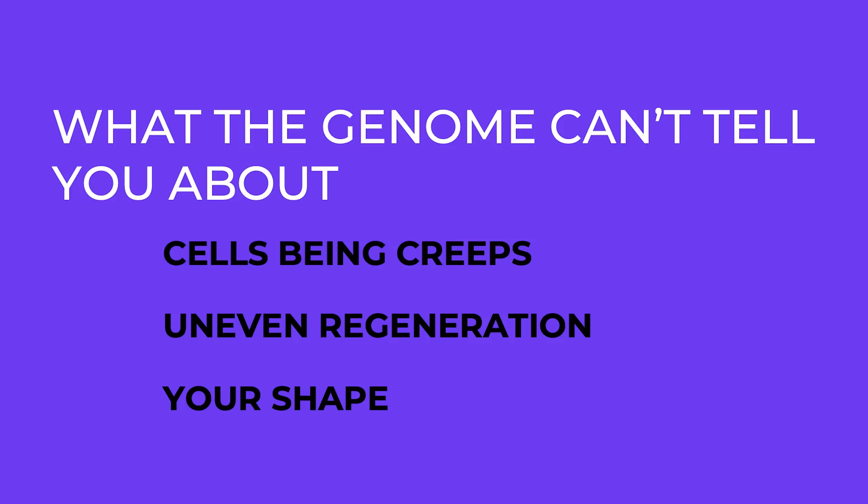Now we start to have this idea that everything is electric, and that gives us the chance to start looking at some very long-standing mysteries we haven't been able to solve. The first is galvanotaxis. Take a Petri dish, put a cell in it, and put an electric field on it. Any cell will start physically crawling across the Petri dish to the cathode end of the electric field. That is gross. Scientists knew about it since the 1920s but essentially refused to understand it. Now we're starting to get a little bit of a hint.